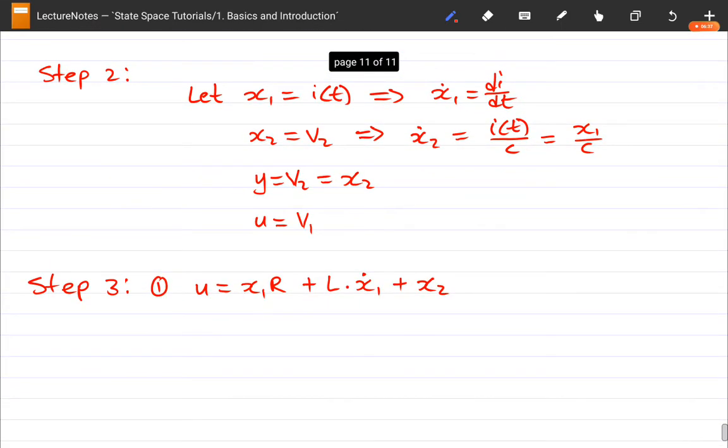So what we want to do is we want to rearrange this equation so that X1 dot is the subject of our equation. So we're just going to do this, X1 dot equals minus X1*R minus X2, and put that in brackets, minus U, 1 over L.